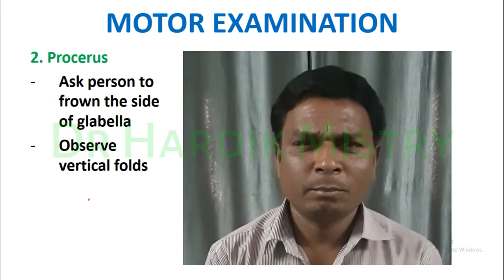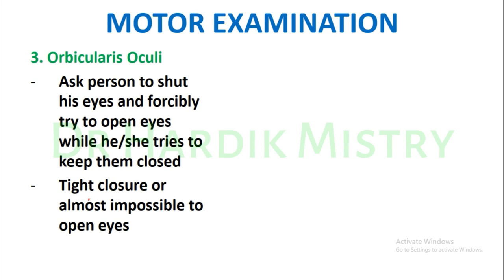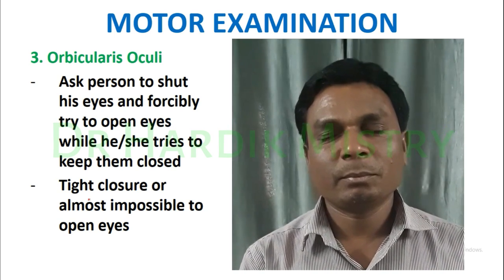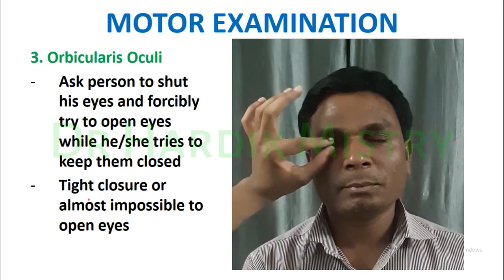For orbicularis oculi, ask the person to shut their eyes tightly. Forcibly try to open the eyes with your index finger and thumb while they try to keep them closed. If you are not able to open the eyes of your subject, then the orbicularis oculi muscle action is intact.